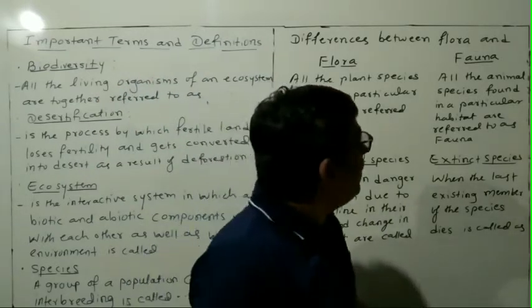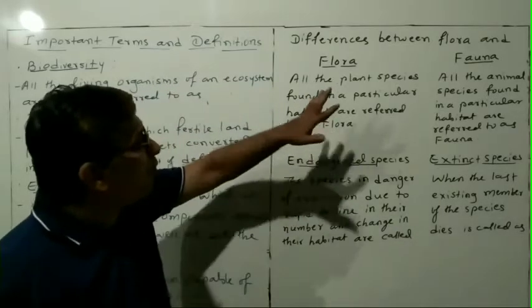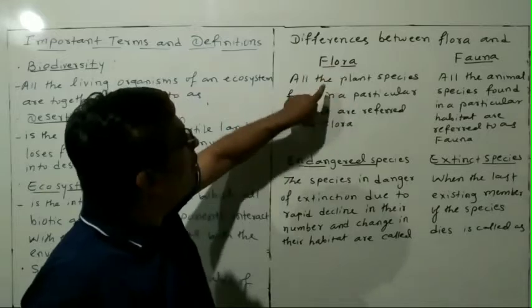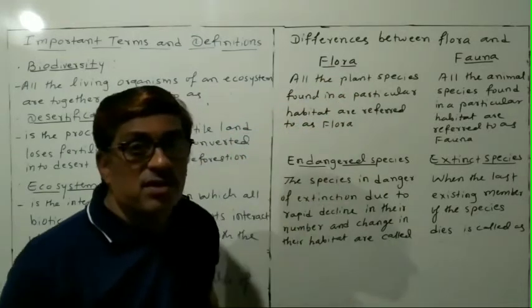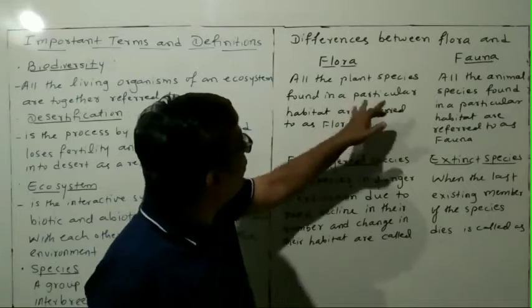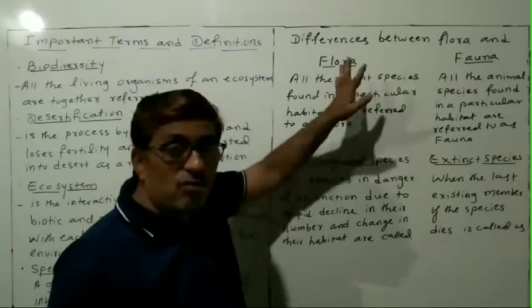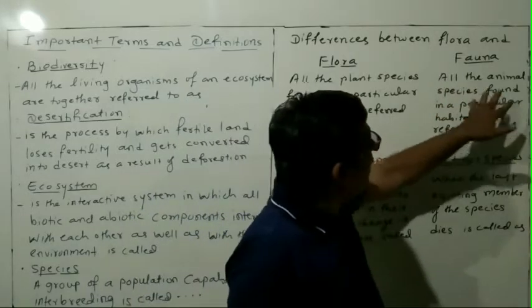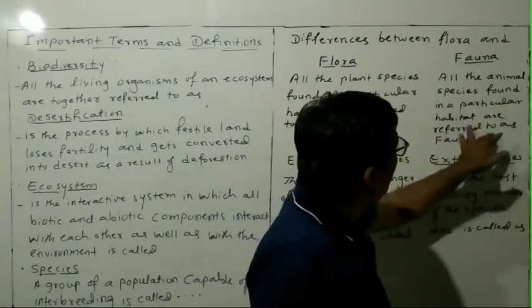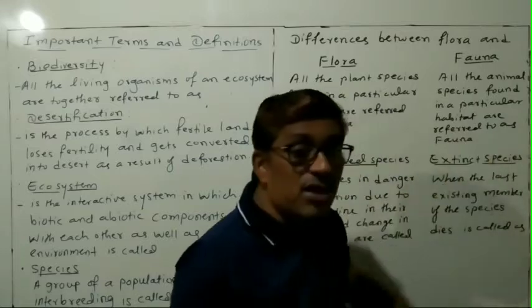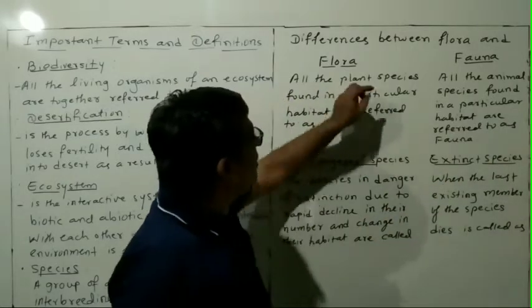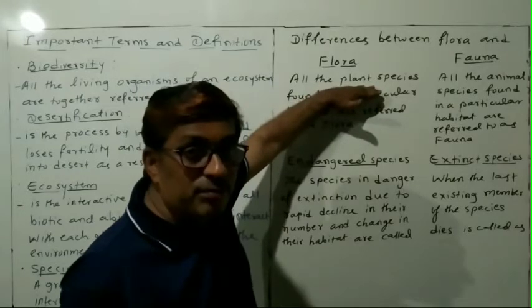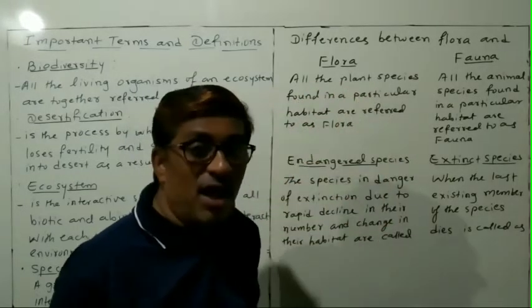Now let's see the differences between flora and fauna. Flora means all the plant species found in a particular habitat, referred to as flora. And fauna means all the animal species found in a particular habitat, referred to as fauna. You only have to change the words plant and animal — the remaining sentences are the same.